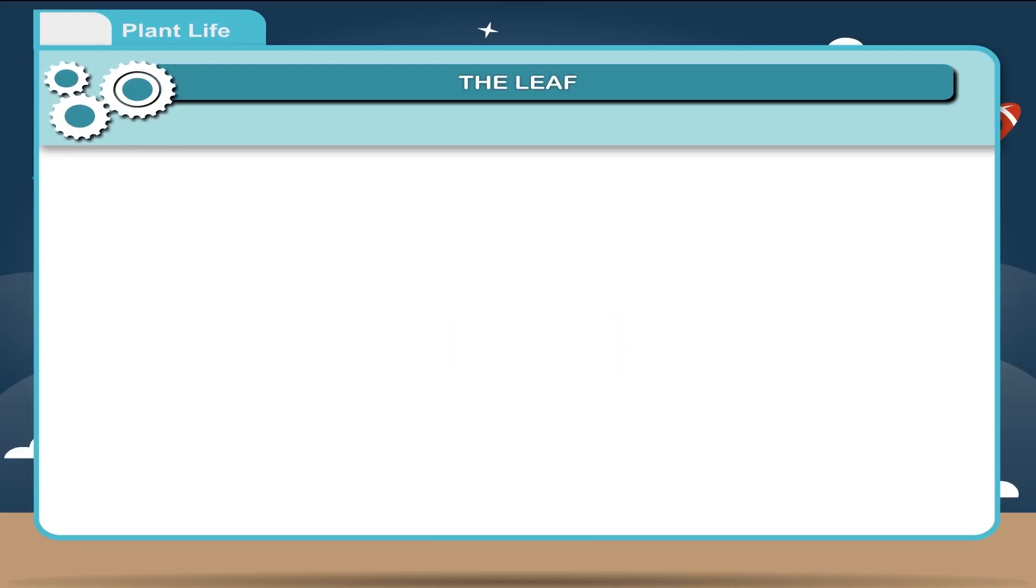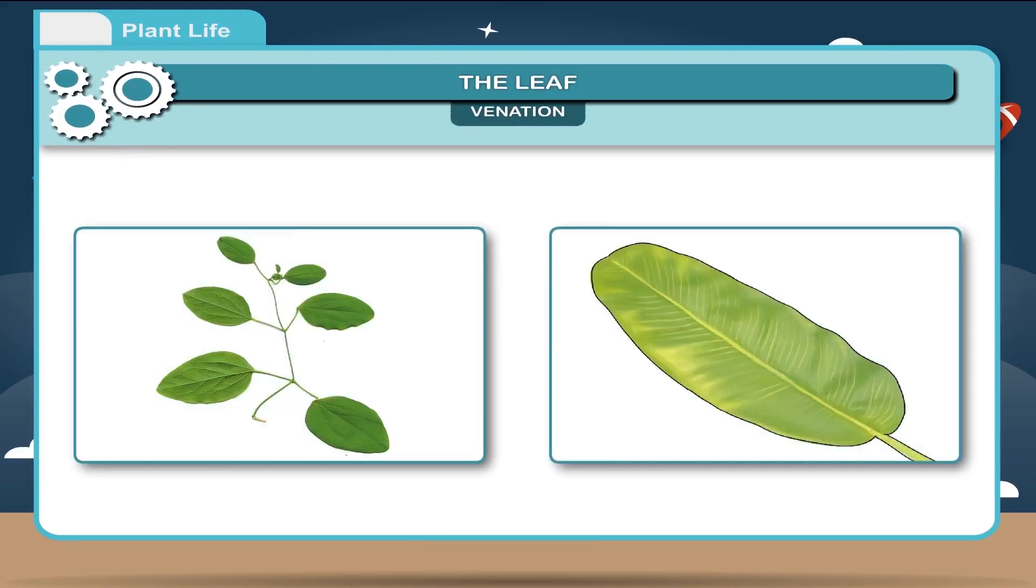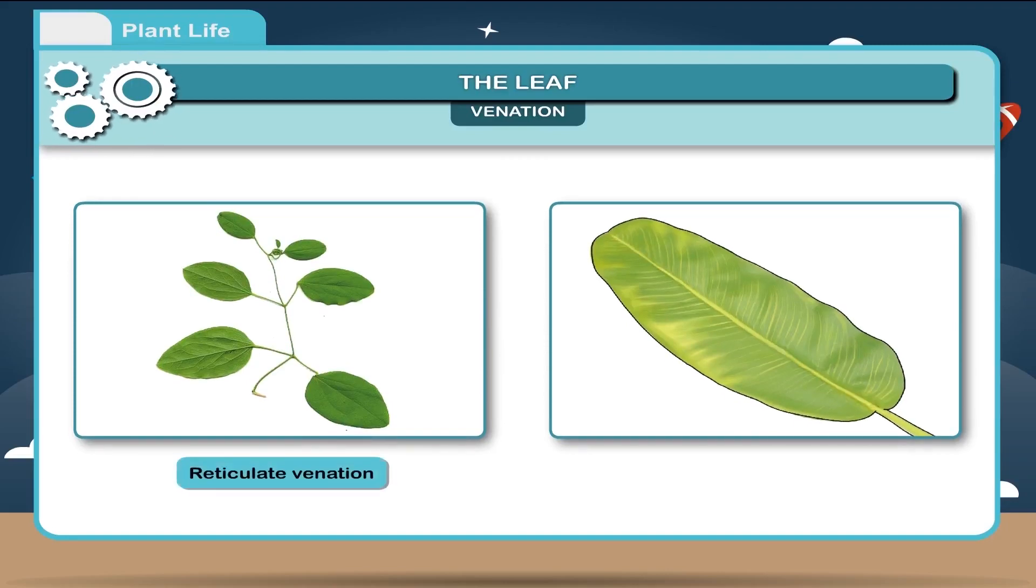Venation: The arrangement of veins and veinlets of the leaf blade is called venation. Venation is of two types: reticulate venation and parallel venation.